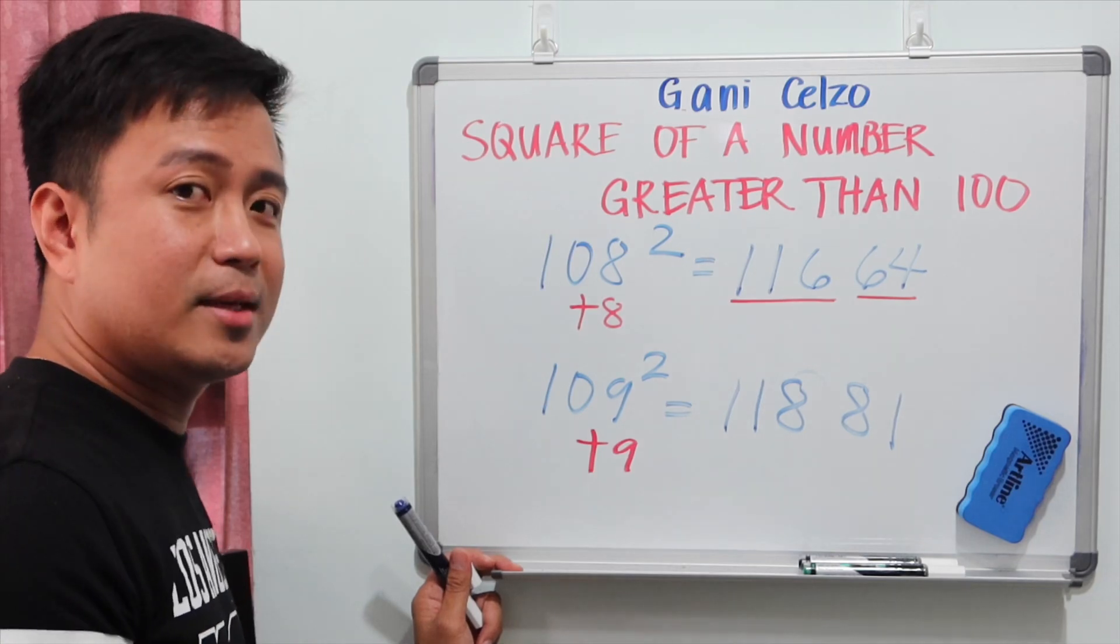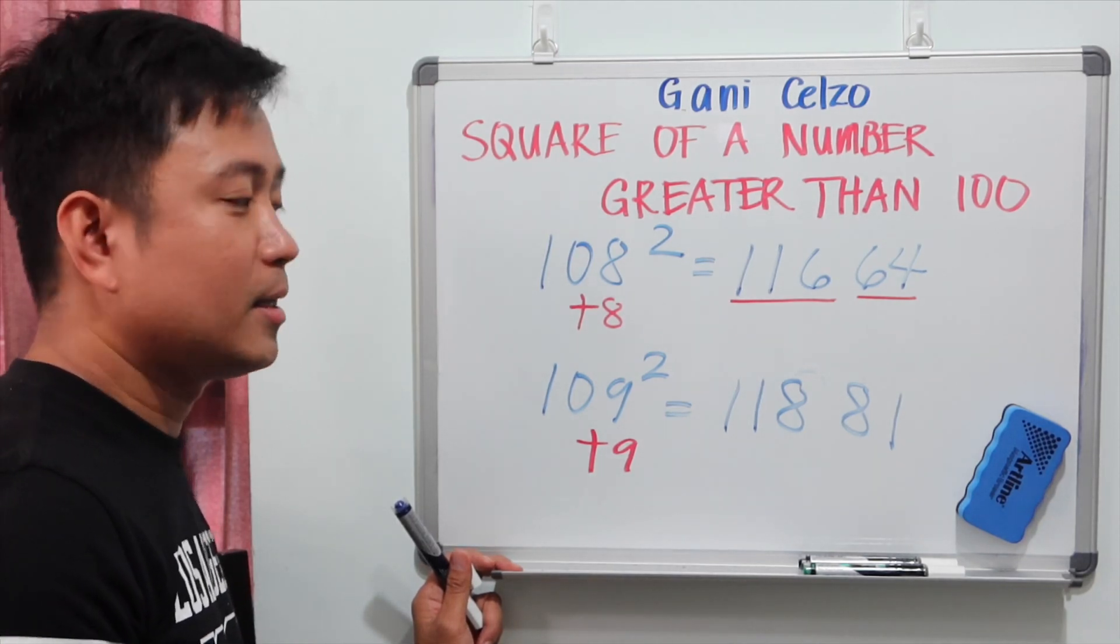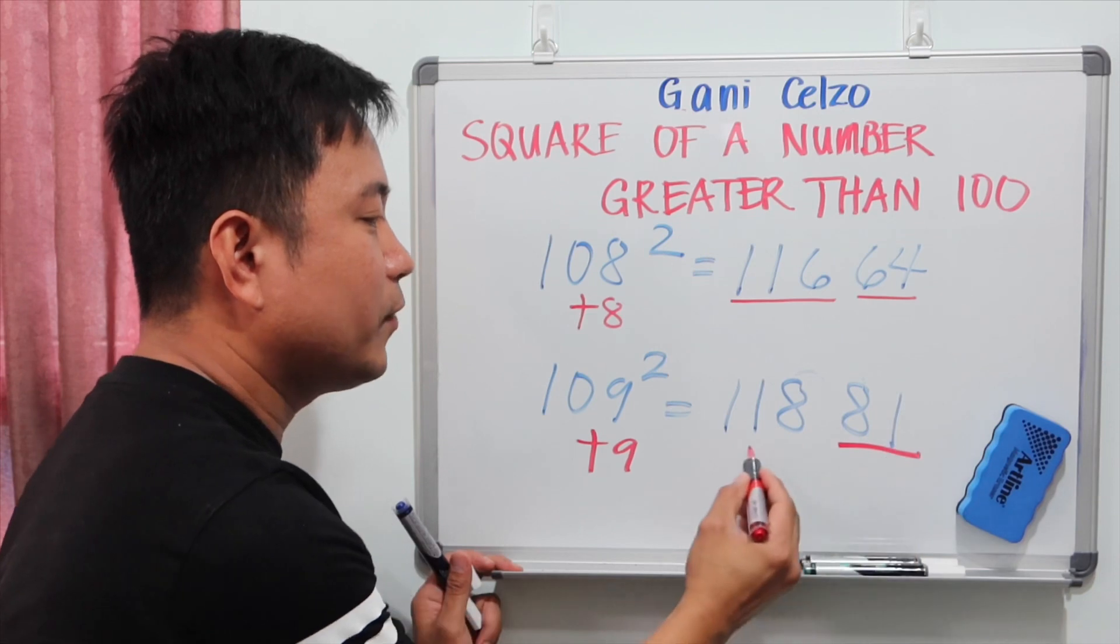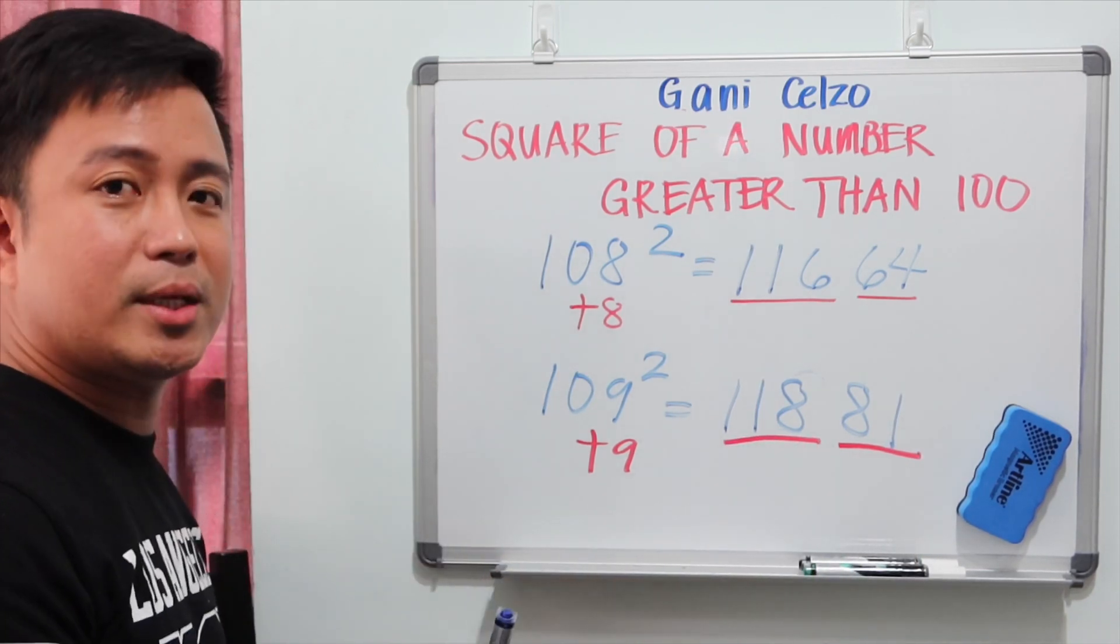9 more than 100, that's 109. 9 square, you get 81. So you have 11,881.